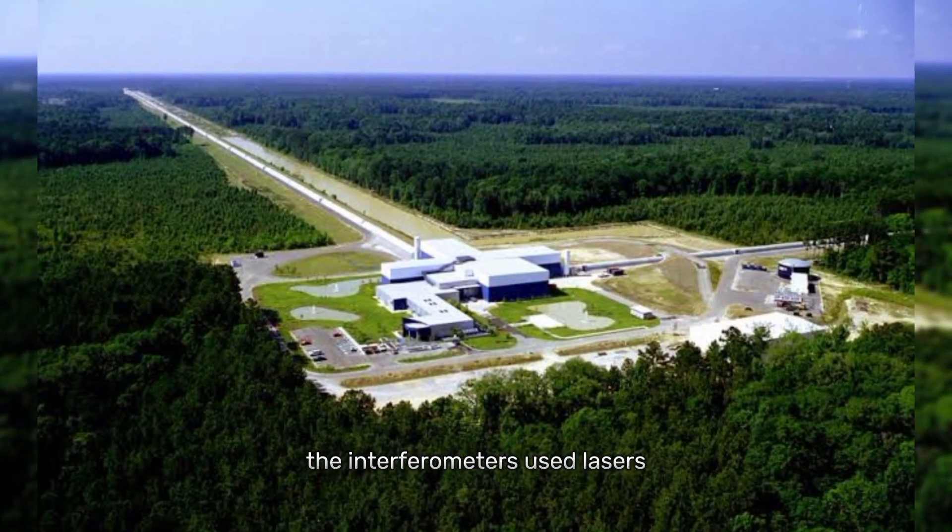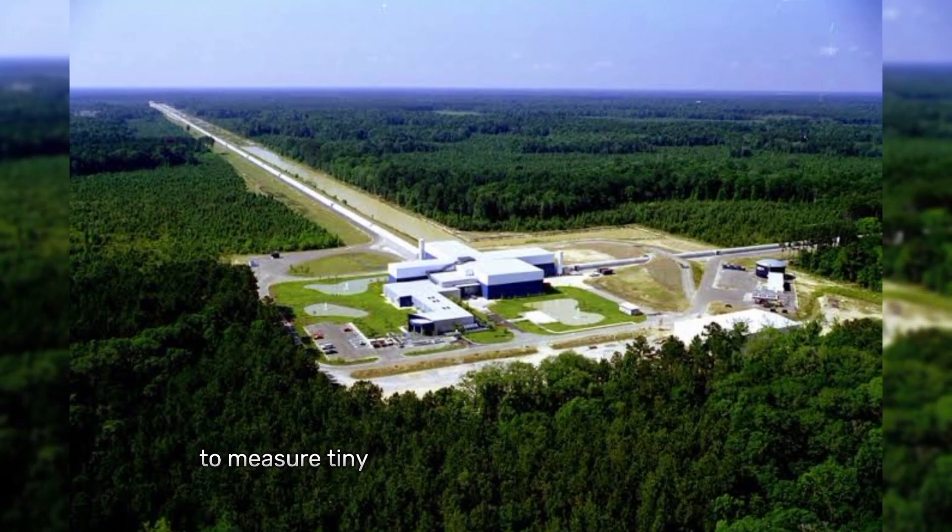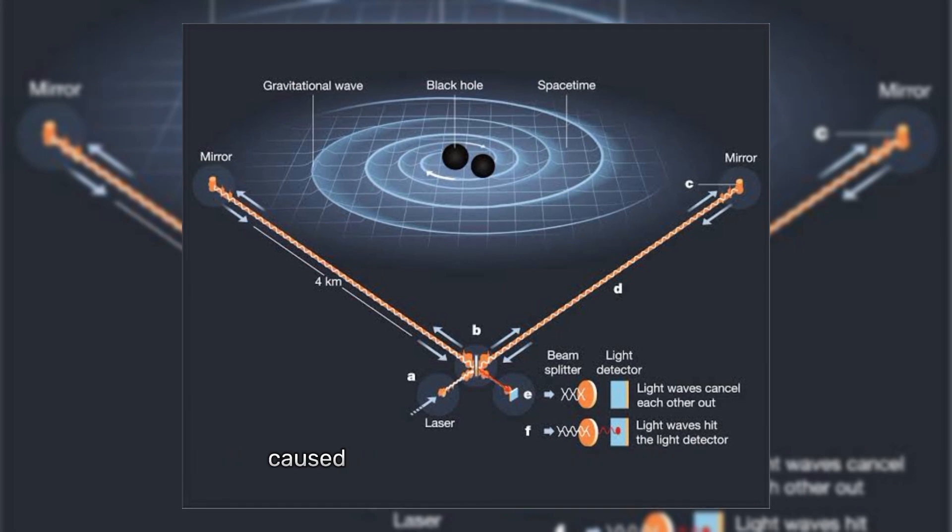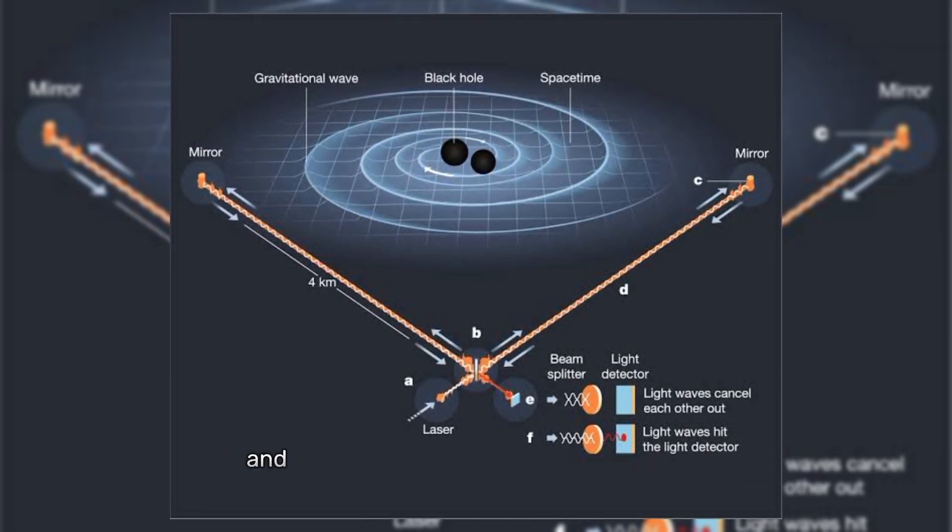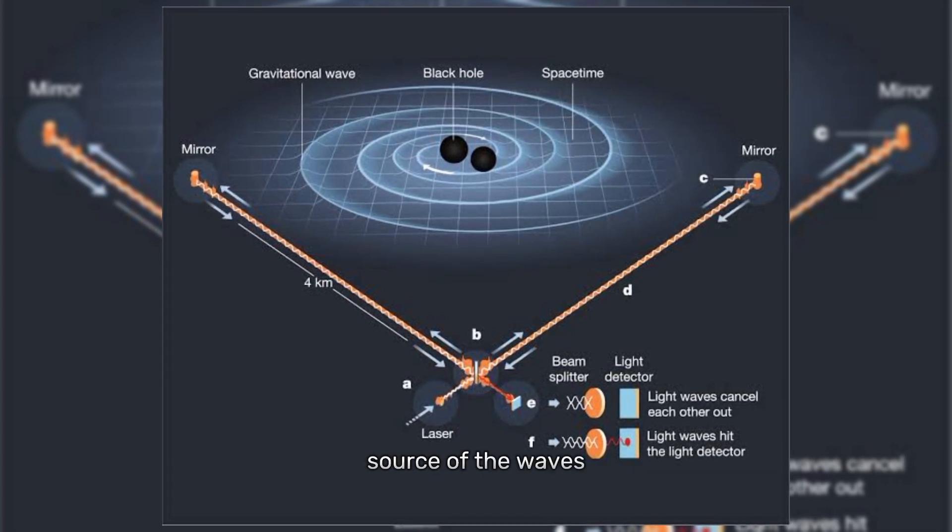The interferometers use lasers and mirrors to measure tiny changes in the length of their arms caused by passing gravitational waves, which are then used to calculate the properties of the source of the waves.